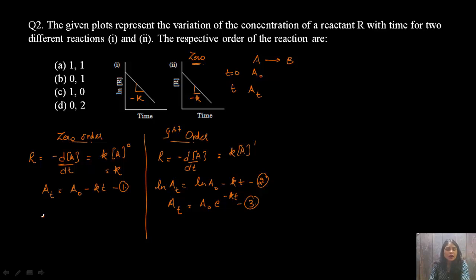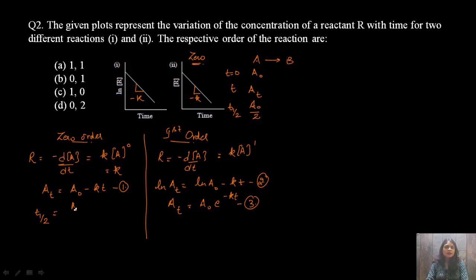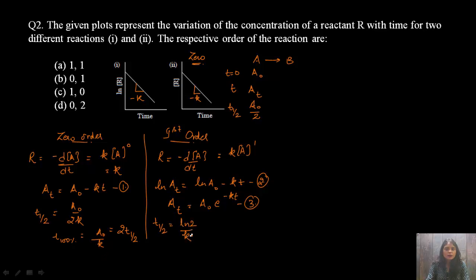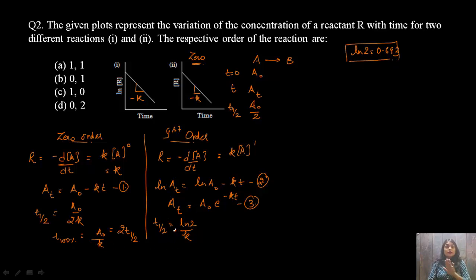Half-life is the time at which the concentration of the reactant has become half — 50% of the reaction is complete. For zero order: t½ = A₀/2K, and 100% completion takes A₀/K, which is twice t½. For first order: t½ = ln2/K = 0.693/K — remember this value. Importantly, for first order, t½ is independent of concentration.